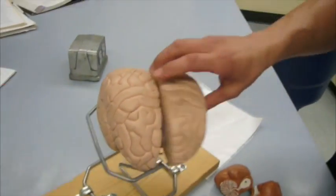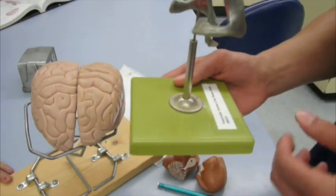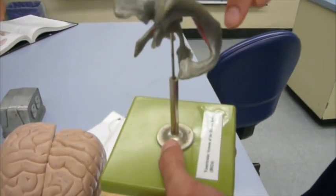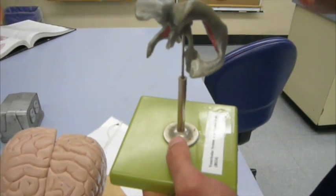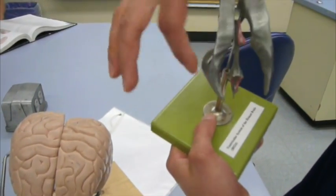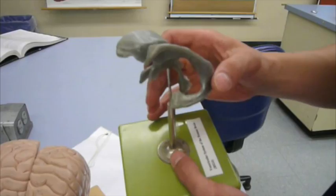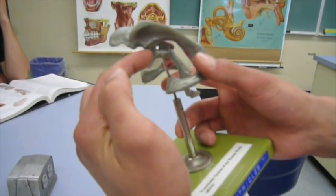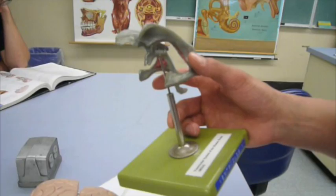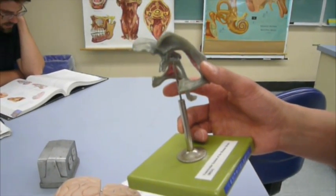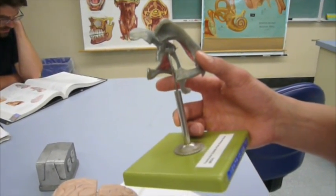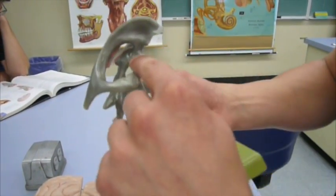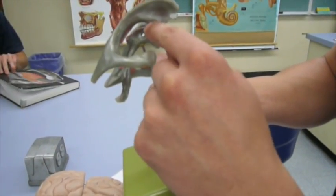Moving on to this guy. We have the lateral ventricles, which is the entire gray part right here. Lateral ventricles. We have the third ventricle, which is this part right here. And then we have the interventricular foramen, which is going to be this area right here.